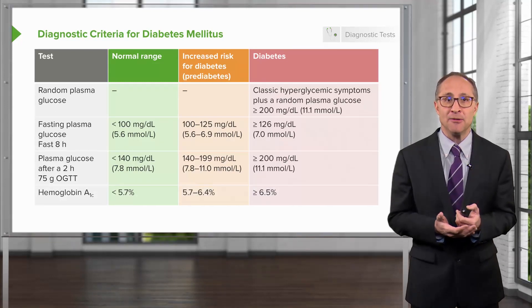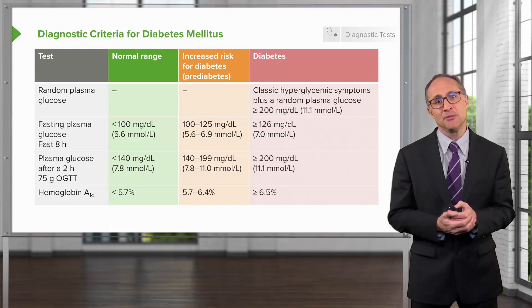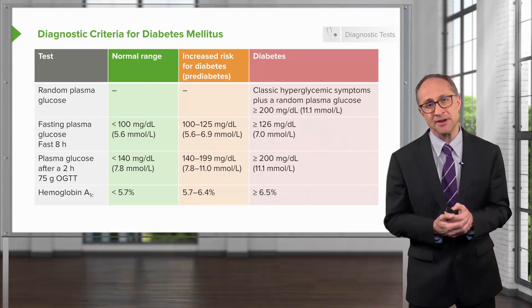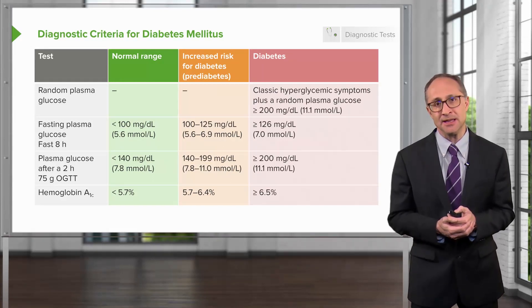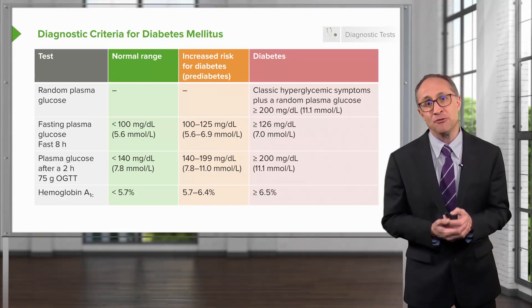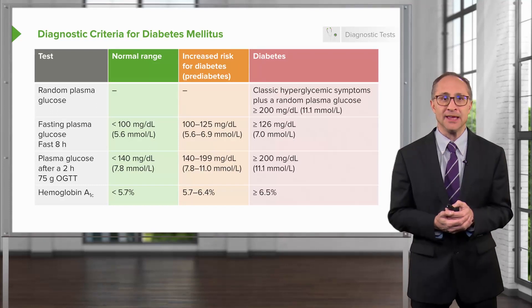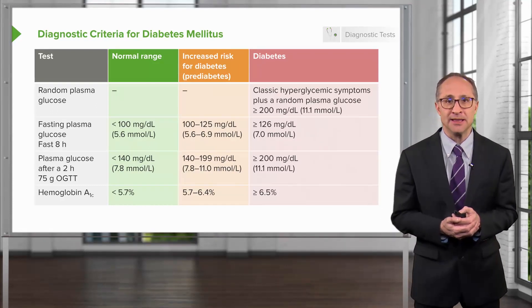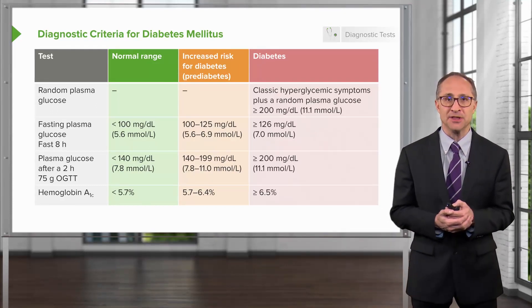Hemoglobin A1c of less than 5.7% is normal. Between 5.7 and 6.4% indicates pre-diabetes. And overt diabetes is diagnosed when the hemoglobin A1c exceeds 6.5%.